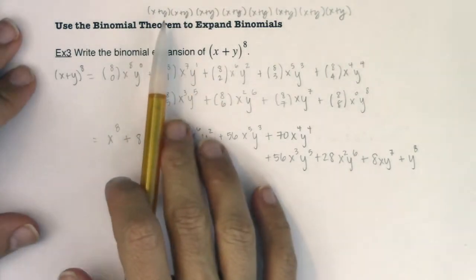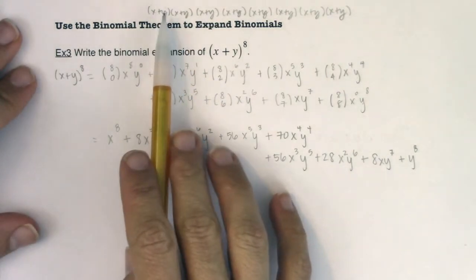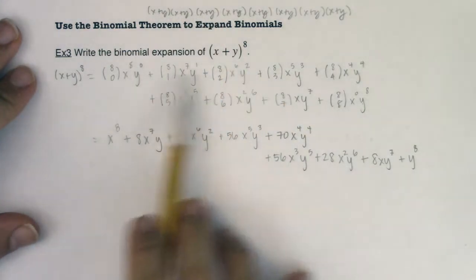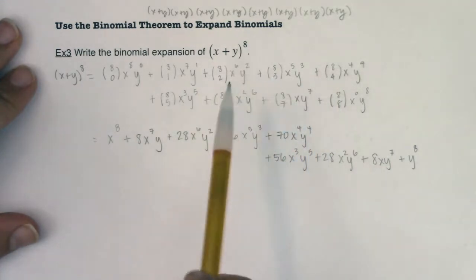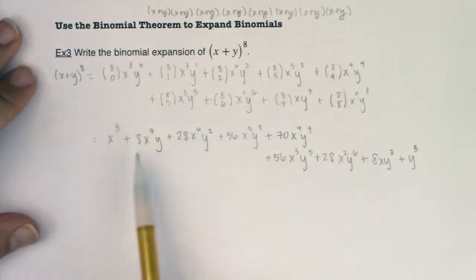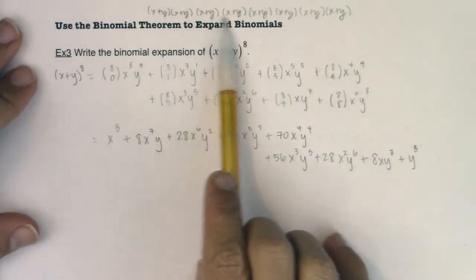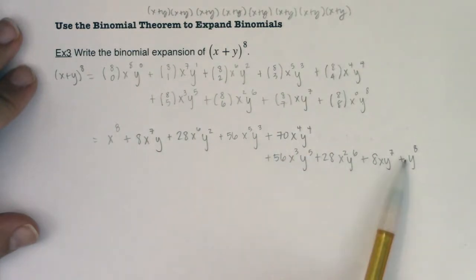So now again, you could be taking your Friday night and multiplying all of these out and collecting like terms. But I would argue even though the binomial theorem is a little bit of a pain, it is way faster than doing that. So here is the binomial expansion. If I were to take x plus y and raise it to the eighth and multiply everything out and collect like terms, this would be my answer.